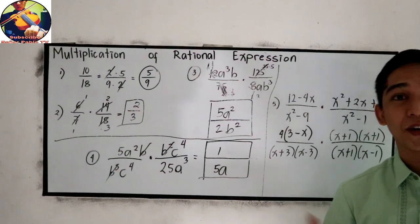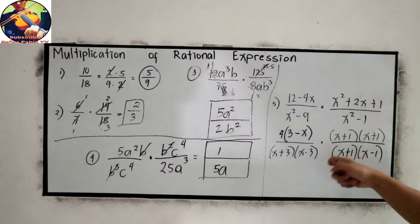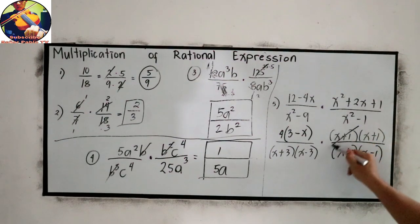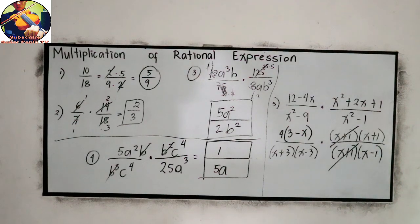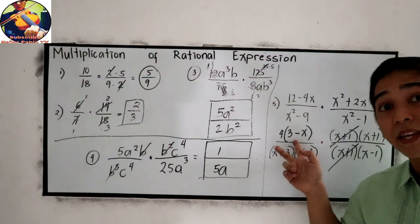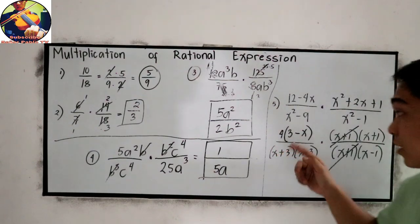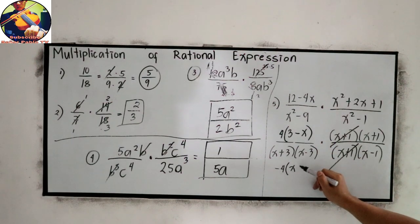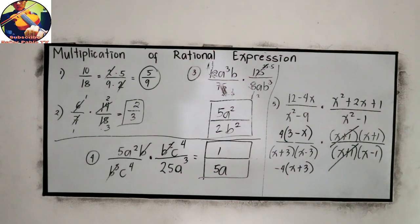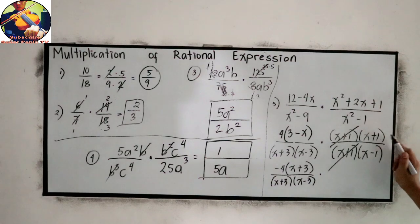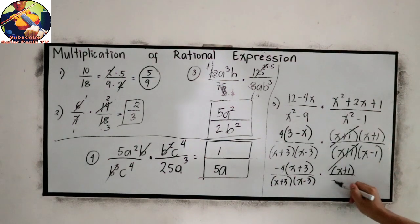Again, master all the different factoring techniques. Now, let us cancel similar terms: x plus 1, x plus 1. This will become, we can rewrite this as negative 4, then we have x minus 3. Negative 4, then x minus 3. Over x plus 3, x minus 3 times our main expression here is x plus 1, x minus 1.